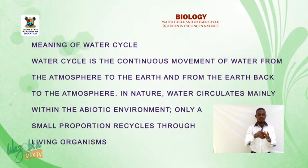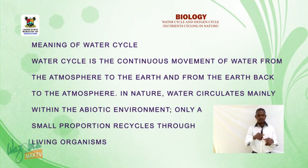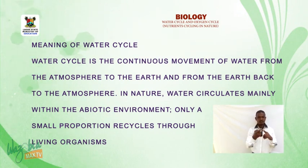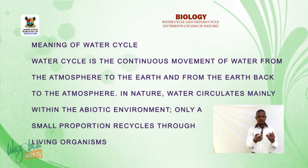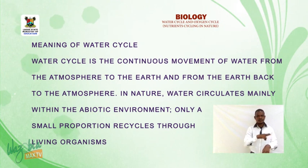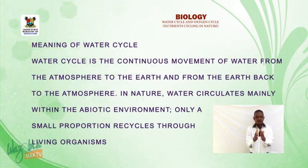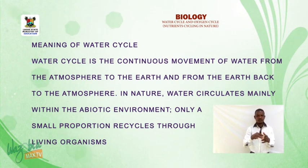Now let us take the meaning of the water cycle. The water cycle is the continuous movement of water from the atmosphere to the earth and from the earth back to the atmosphere. In nature, water circulates mainly within the abiotic environment; only a small proportion recycles through living organisms.